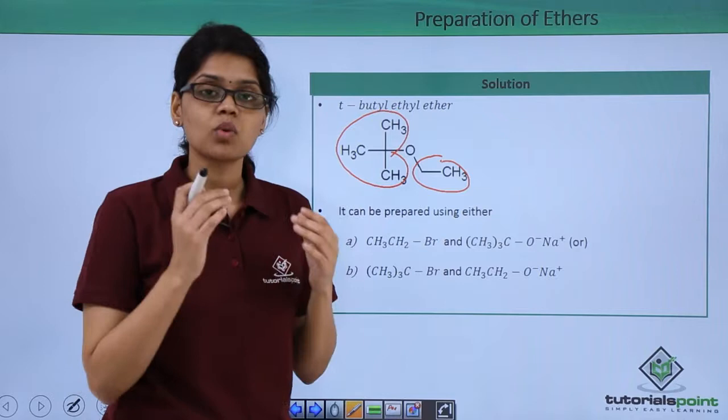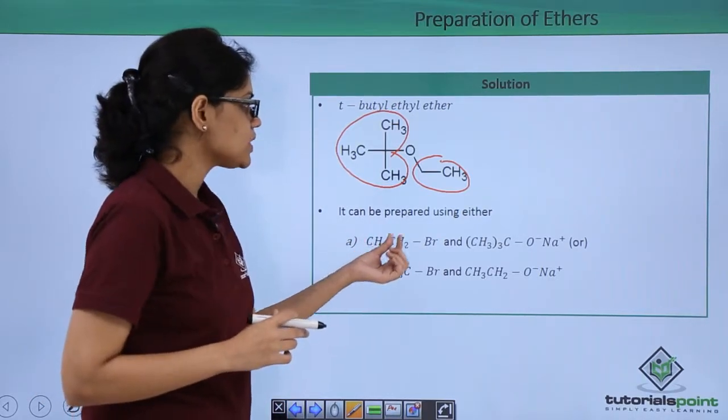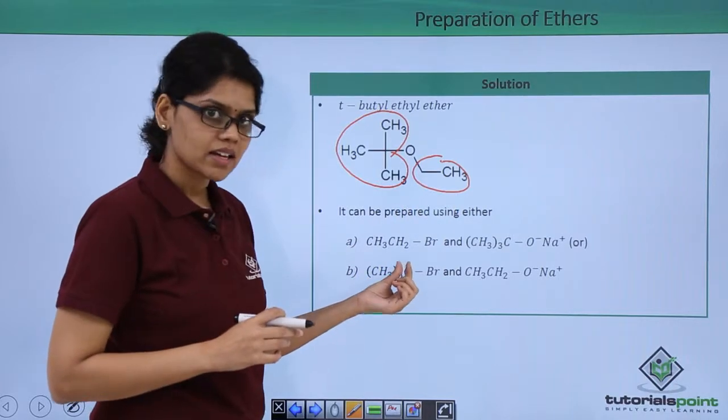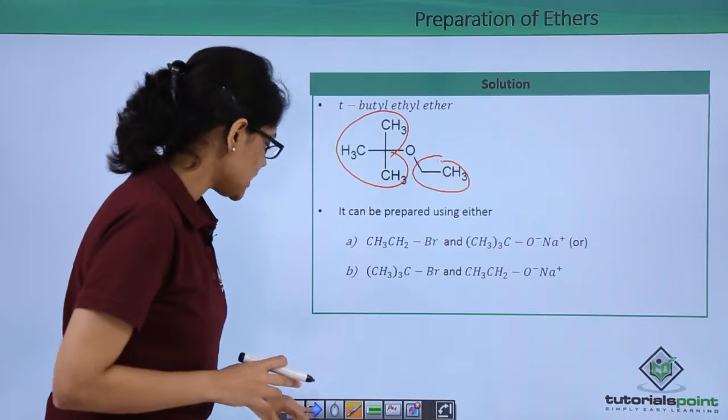Let us try to understand what will be the products obtained in each of those cases. In the first case, we are taking ethyl bromide as the alkyl halide and tert-butoxide ion as the attacking species.